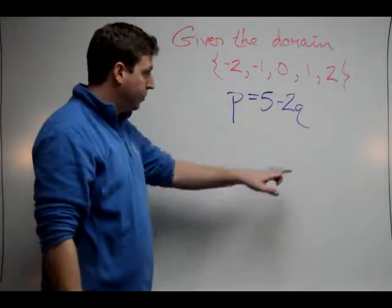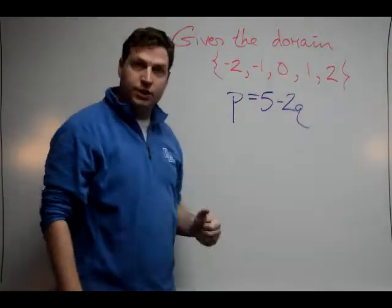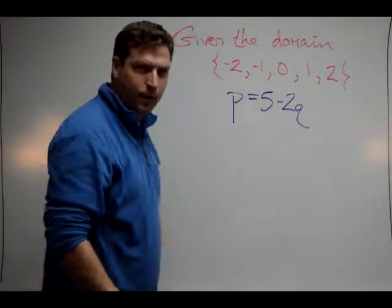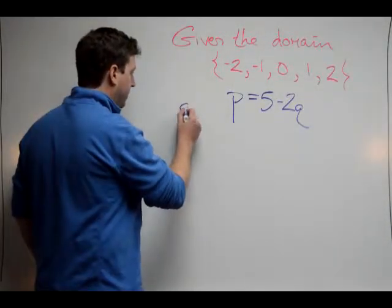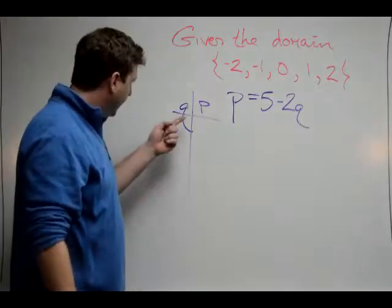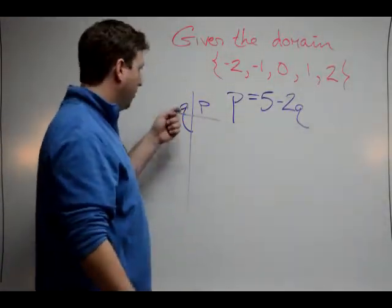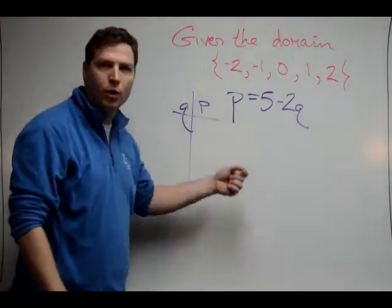In this example, our input is Q, which is the domain, and our range is going to be our P values. The easiest way to do this is to make a table. We're used to seeing X and Y, but those are just variables—they stand for the domain and the range, the input and the output.